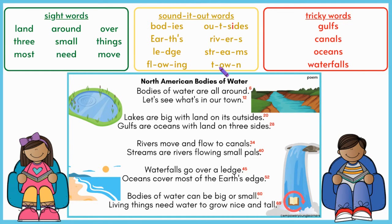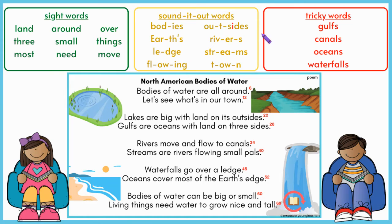Now let's read the yellow words that we can sound out. We have bodies, earths, ledge, flowing, outsides, rivers, streams, town.